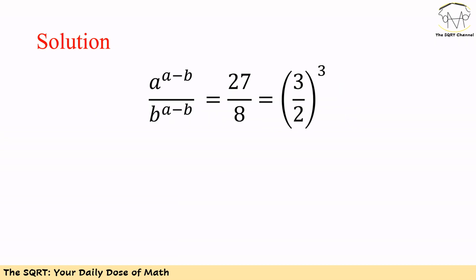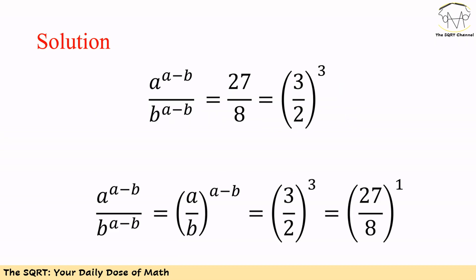We also know that 27/8 can be written as (3/2)³. So we have a^(a−b) over b^(a−b), which equals (a/b)^(a−b), and this is equal to (3/2)³, or equivalently (27/8)^1.